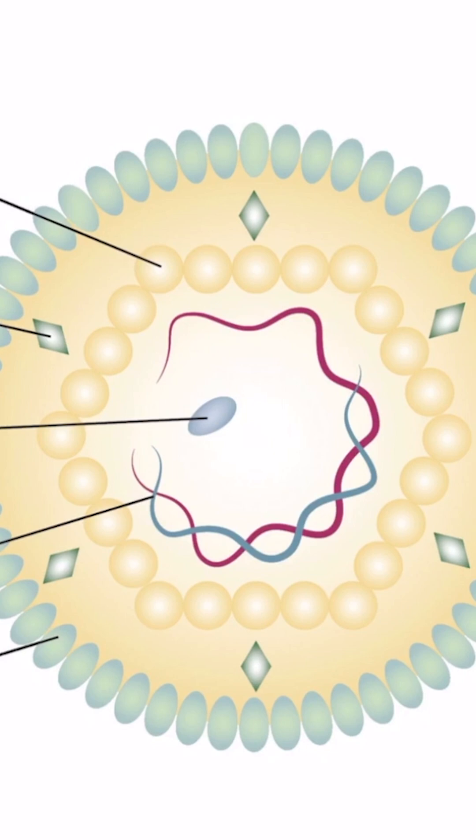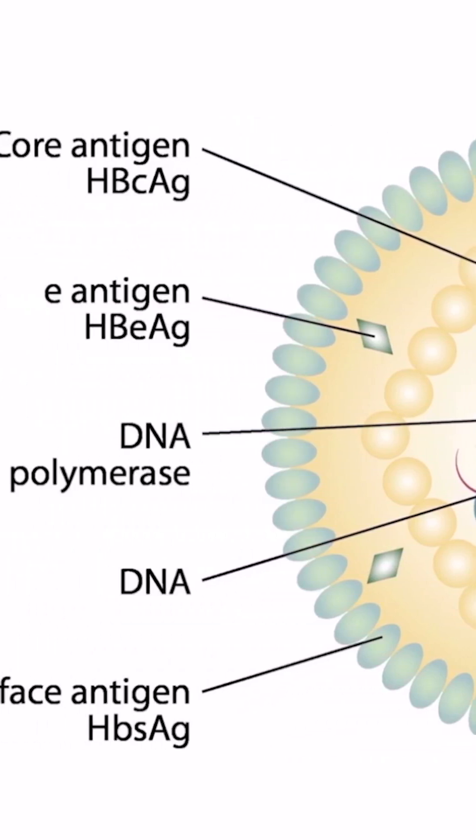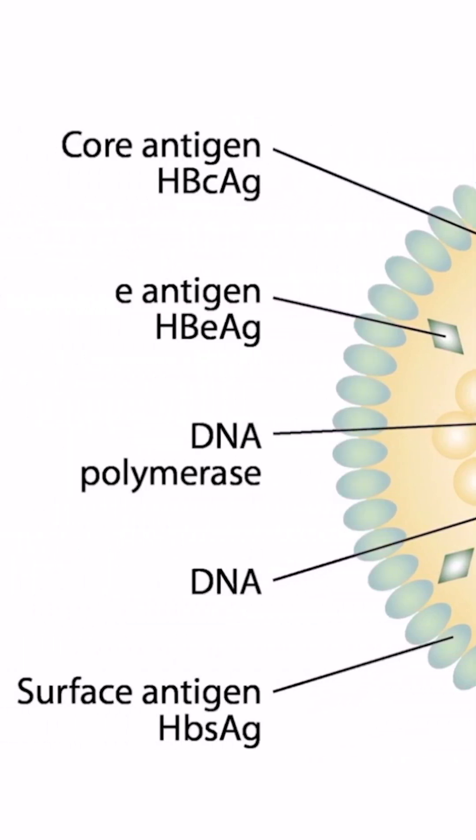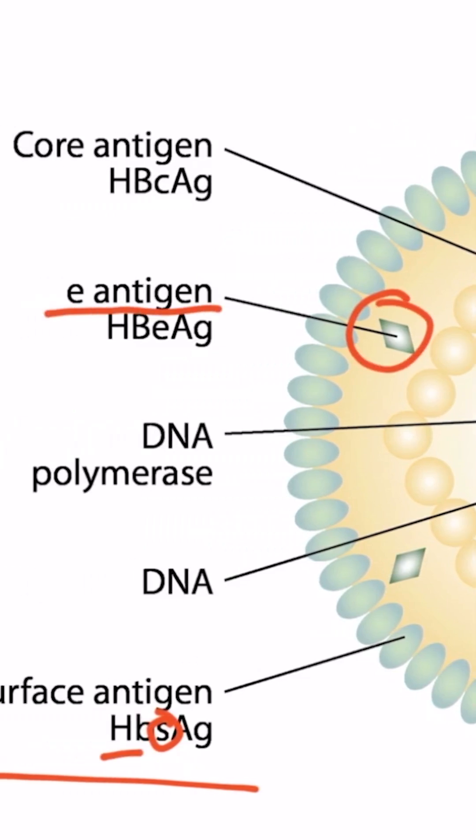So let's get started. This diagram shows the basic structure of Hepatitis B. Starting from the outside, we see the surface. This is the location of these surface antigens. These are termed the Hepatitis B surface antigens. Going deeper now, we see these proteins, which represent the E antigen. These are termed the Hepatitis B E antigens.